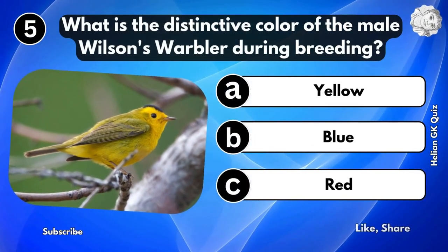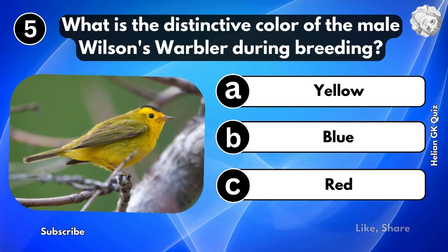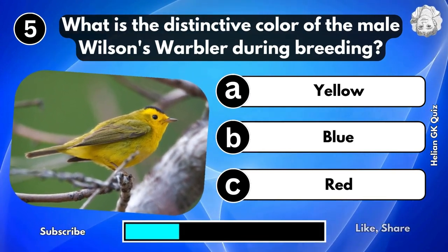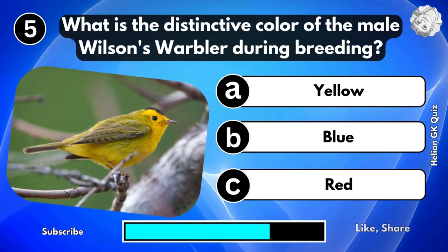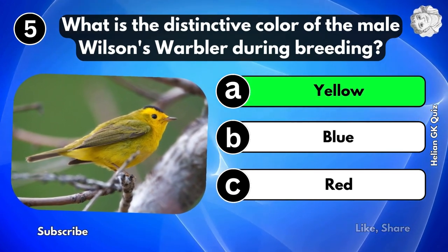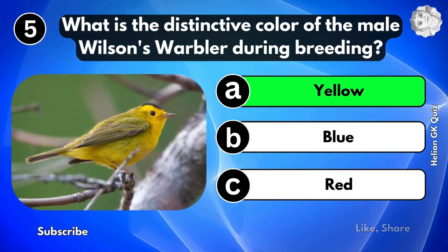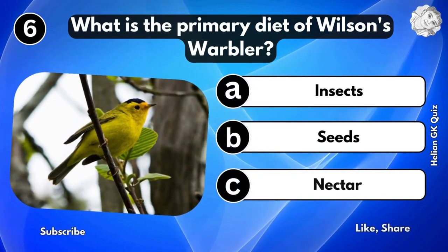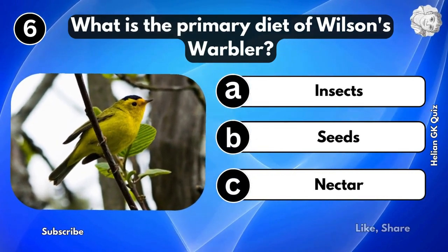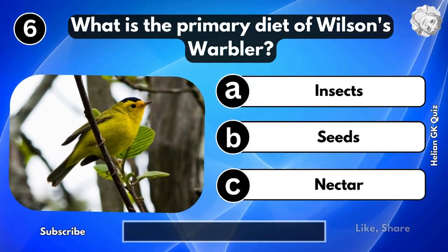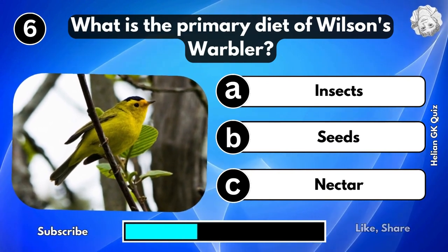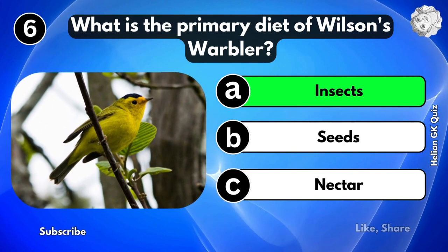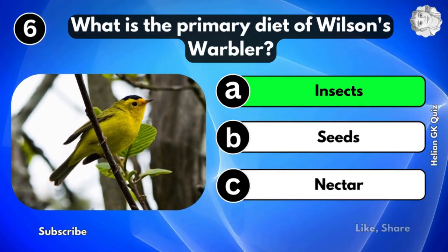What is the distinctive color of the male Wilson's Warbler during breeding? Yellow color. What is the primary diet of Wilson's Warbler? Insects.